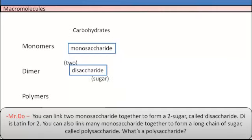You can link monosaccharides together to form two sugars called disaccharide. Di is Latin for two. You can also link many monosaccharides together to form a long chain of sugar called polysaccharide. What's a polysaccharide?